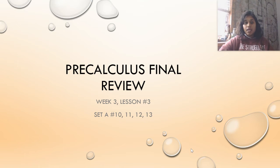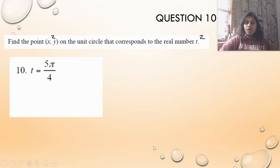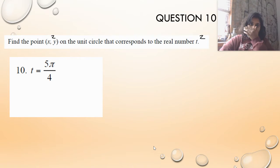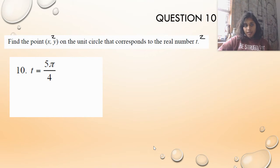Welcome to video 3a where we're covering more trig review. Let's jump on in. So find the point x, y on a unit circle that corresponds to the real number. Nice and easy — what is the literal x, y coordinate point on the unit circle?